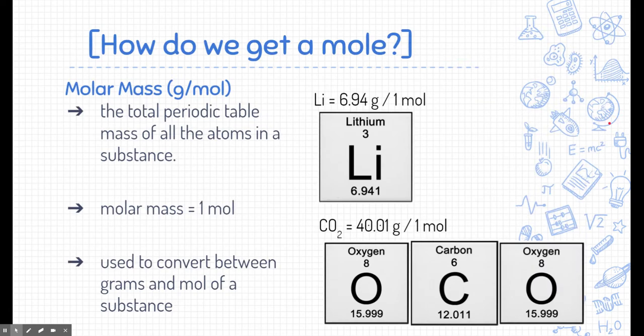So how do we get a mole? Obviously, we can't just count that number — it would take forever, multiple lifetimes before we could even count that quantity. So in order to get a mole, what we have to use is something called a molar mass. In other words, in order to get that quantity, we would weigh it. So the molar mass is where we're going to look.